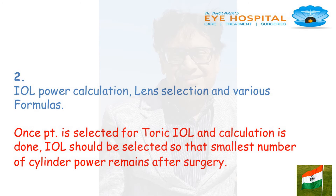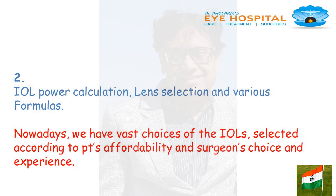Once the patient is selected for toric IOL and calculation is done, the IOL should be selected so that the smallest amount of residual cylinder power remains after surgery. Nowadays we have a vast choice of IOLs — select according to patient's affordability and surgeon's choice and experience.